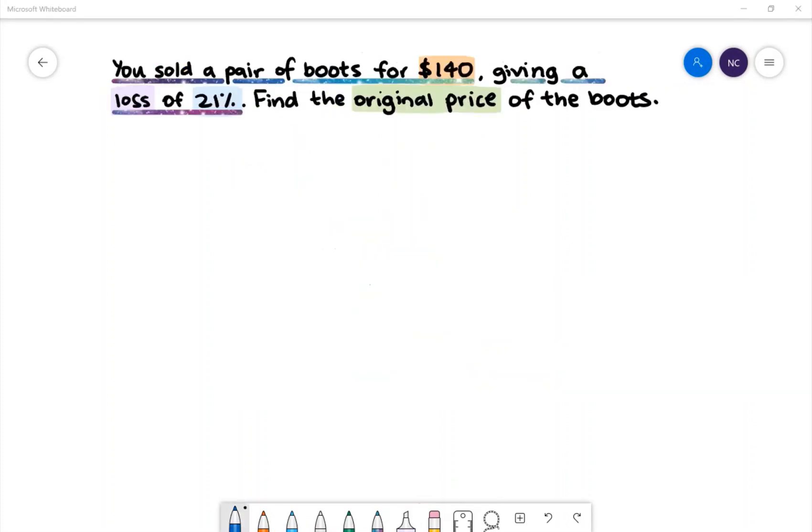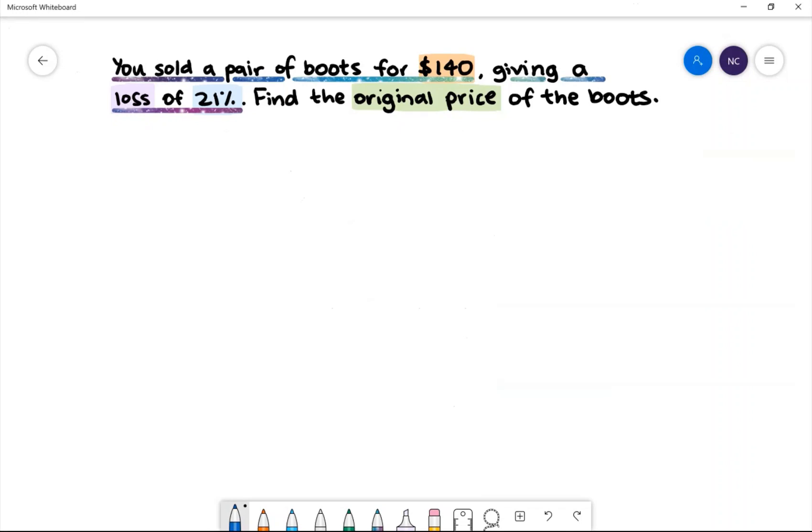Here is our next example. You sold a pair of boots for $140, giving a loss of 21%. Find the original price of the boots. First, we can let the original price of the boots be x.